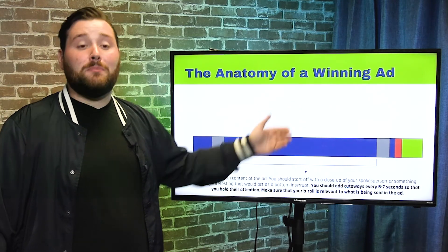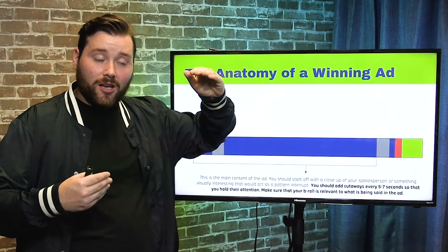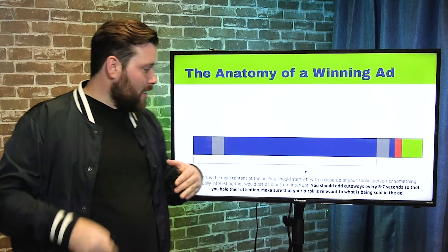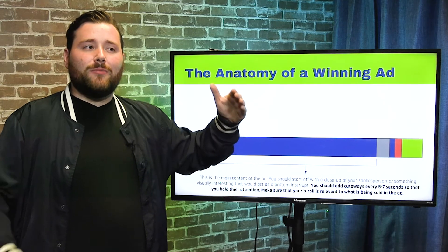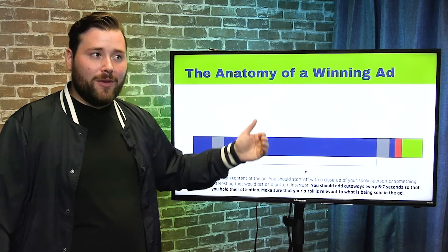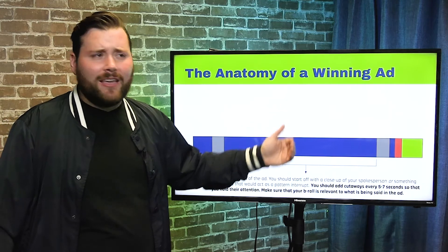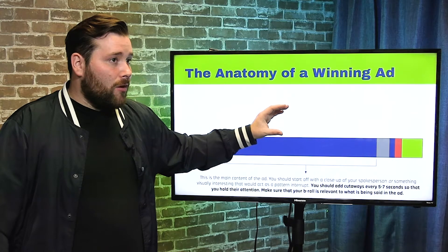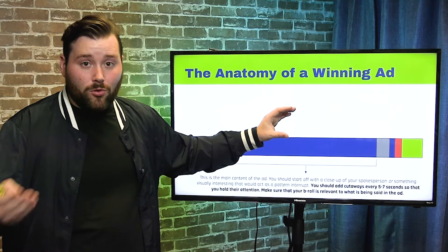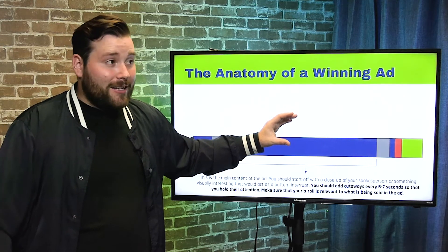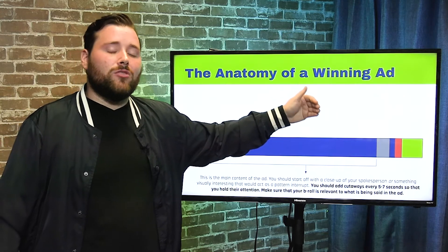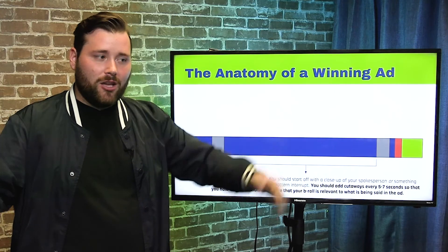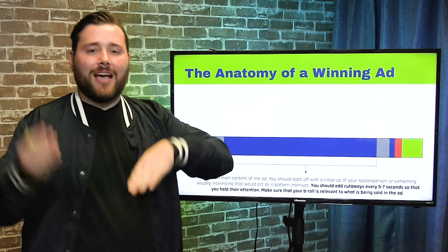With that in mind, we want to cut to different video clips — also called b-roll — every five to seven seconds to keep people's attention. Start with a close-up, deliver the hook, then cut to different shots or stock footage every five to seven seconds. Cut to video clips or images that are relevant to what's being said — whether that's b-roll, wide shots, close-ups, medium shots, or animated text. Something visually has to be happening every five to seven seconds.